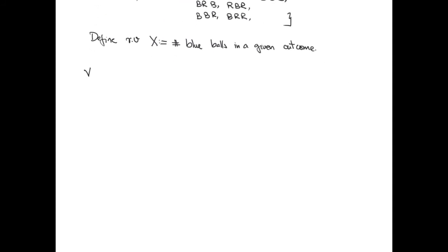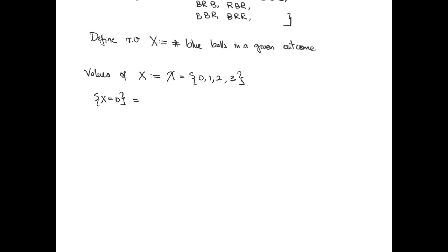We now define a random variable which will count the number of blue balls in a given outcome. Notice that since there are exactly three balls drawn, we could either have zero blue balls, one blue ball, two blue balls, or three blue balls in a given outcome. As a result, the values of x can either be zero, one, two, or three. The sets corresponding to each of these values are as follows.